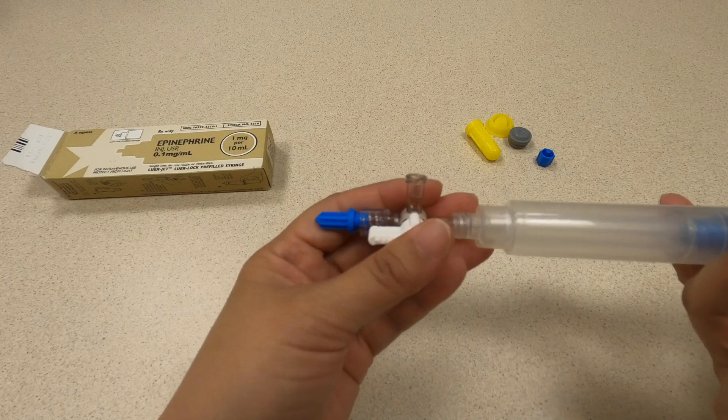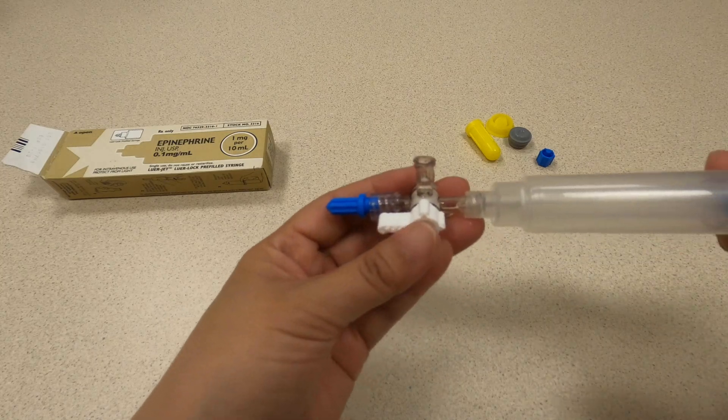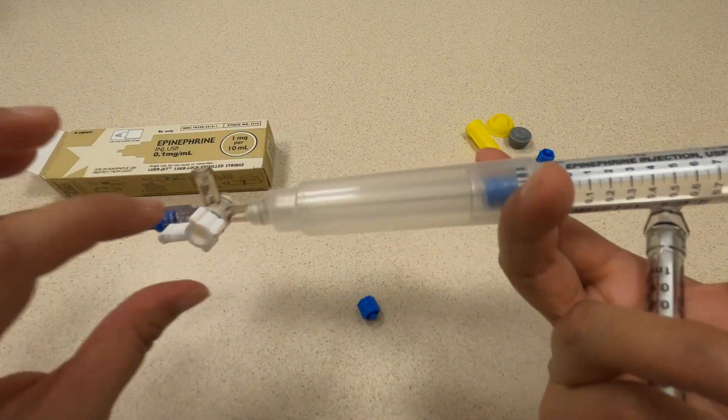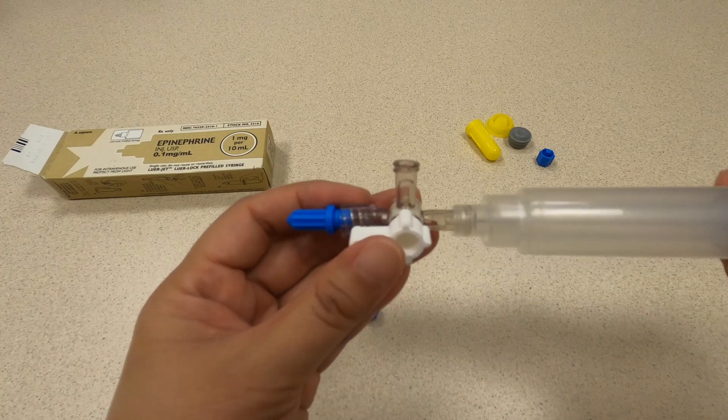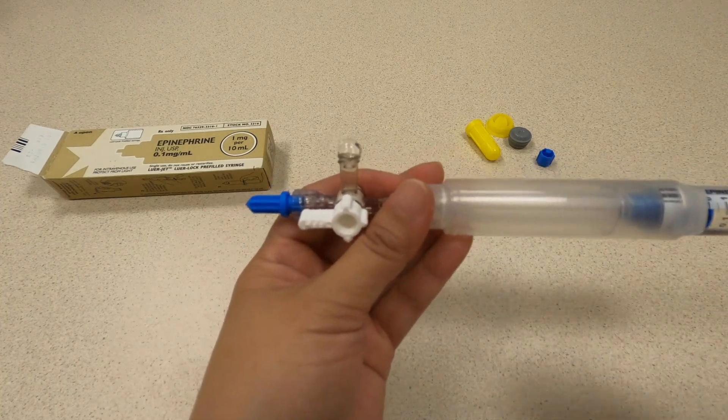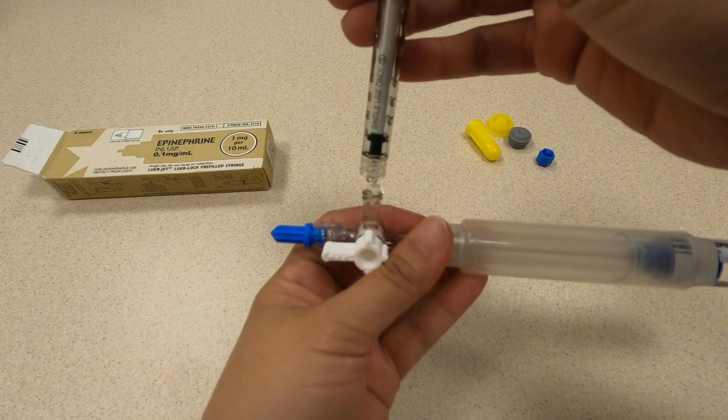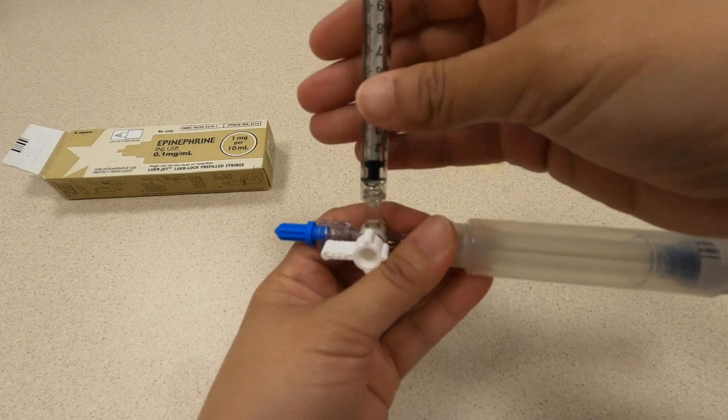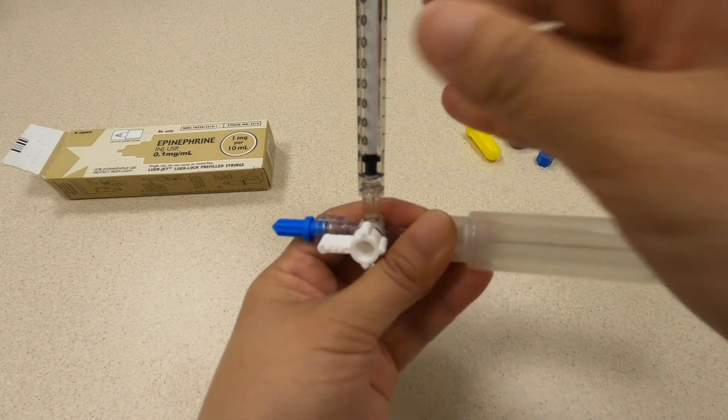The first thing you want to do is prime your stopcock with epi. You see this is still the same two ports open, so you go ahead and prime your stopcock. I'm not wearing gloves because this is just a demonstration, but obviously in real life you would have gloves and use aseptic technique.